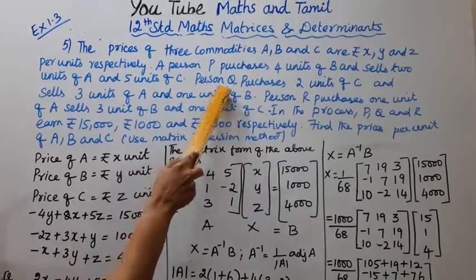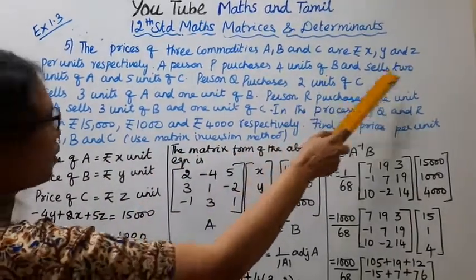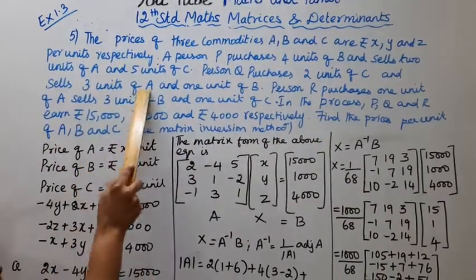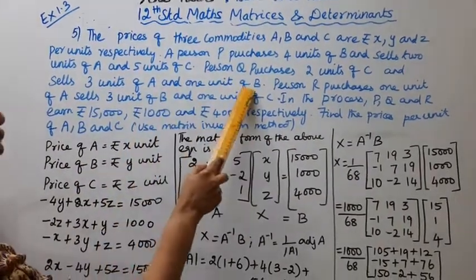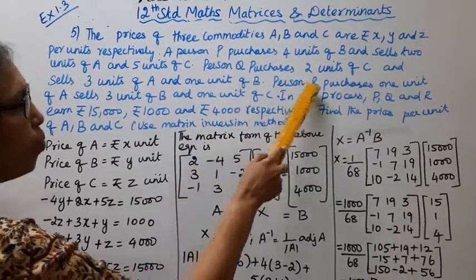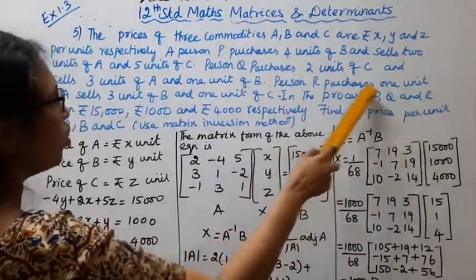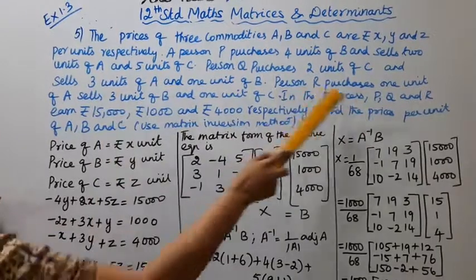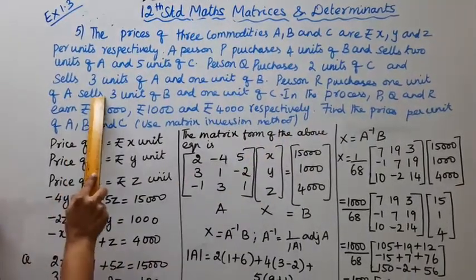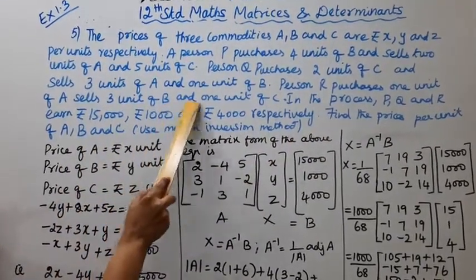A person Q purchases 2 units of C and sells 3 units of A and 1 unit of B. A person R purchases 1 unit of A.